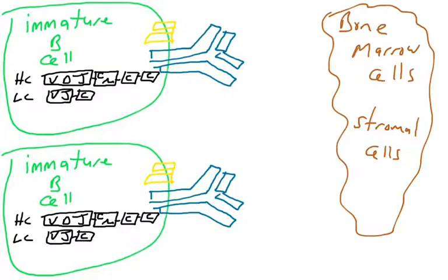We've got two B cells. The top one picked some VDJ from the heavy chain and some VJ from the light chain, so it has some antigen binding site. The one on the bottom picked a different VDJ, different VJ, and it's got a different antigen binding site. We're testing these shapes now for self-reactivity.